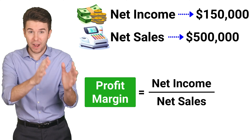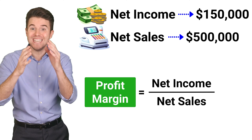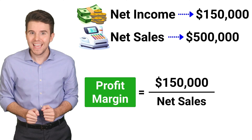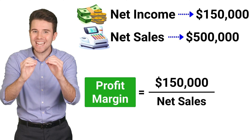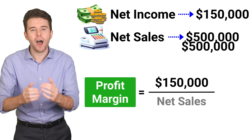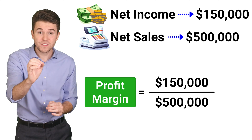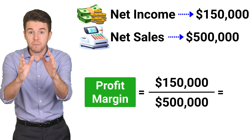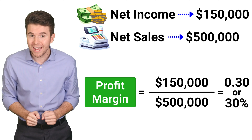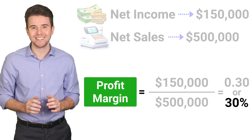Now to compute profit margin, we take net income of 150,000 and divide it by net sales of 500,000. This gives us a profit margin of 0.3 or 30%.